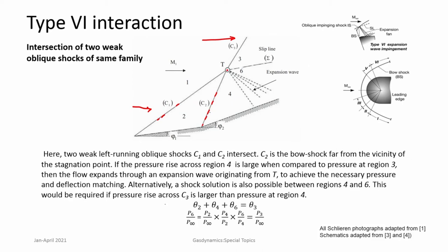With the proper shock strengths, pressure in region 4 is larger than pressure in region 3. As a consequence, an expansion fan develops that makes pressures equal in regions 6 and 3, so P6 equals P3, and V3 is parallel to V6. This is the boundary condition at that location.